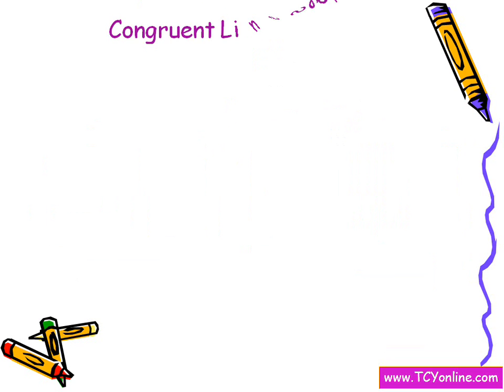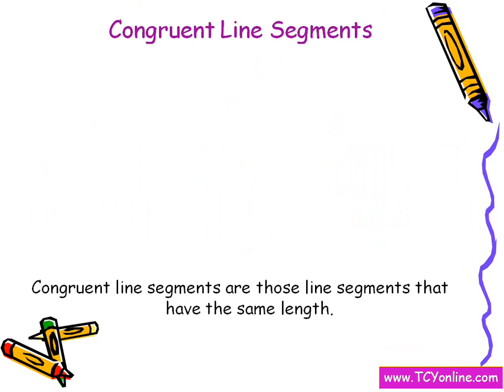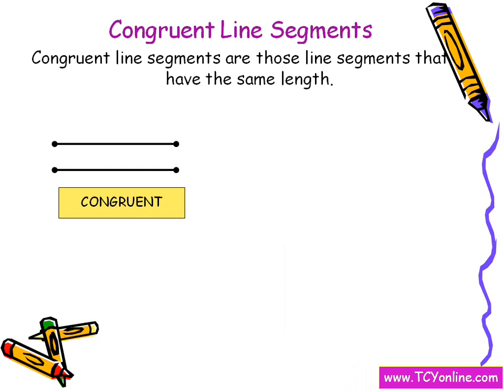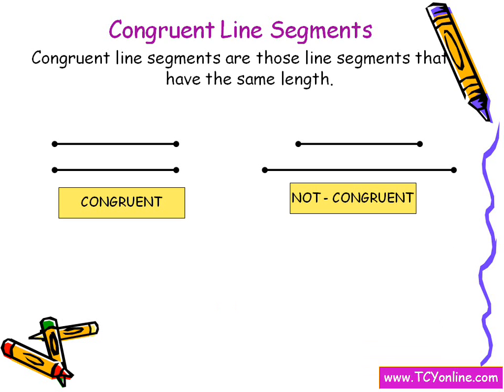Now let's look at the definition of congruent line segments. Congruent line segments are the line segments that have the same length. For example, these two lines are said to be congruent because they have the same length. While these two lines are said to be non-congruent because they don't have the same length.